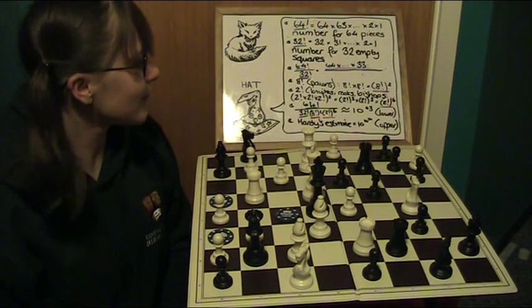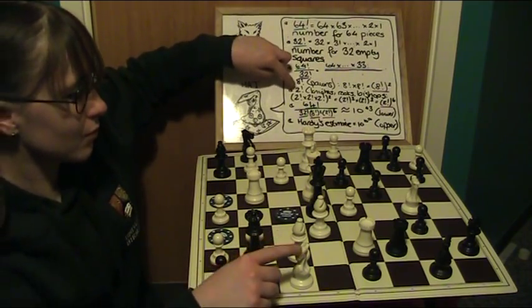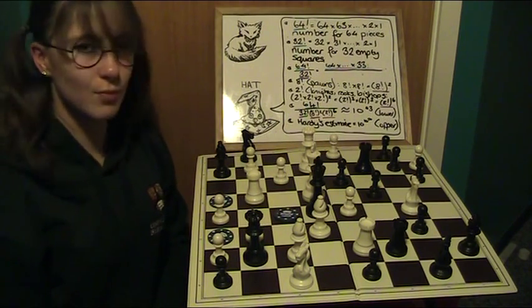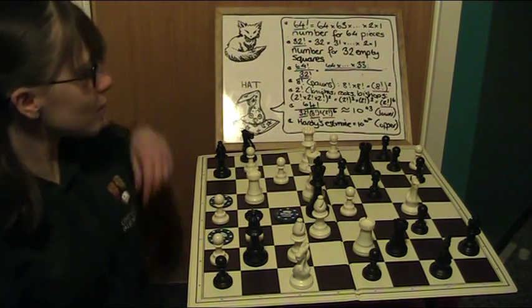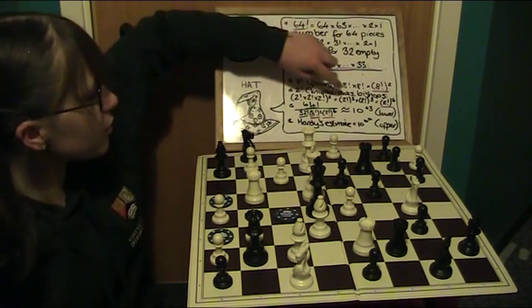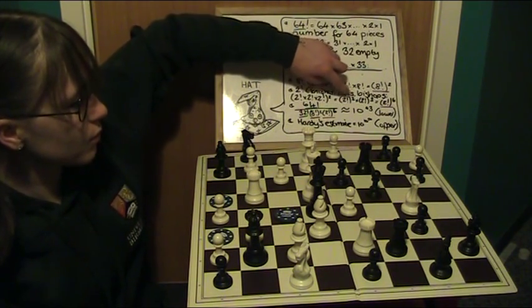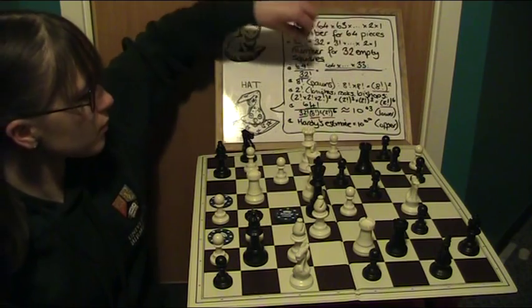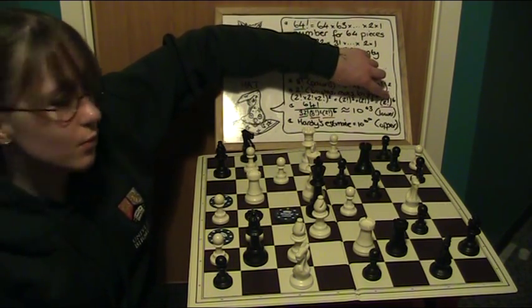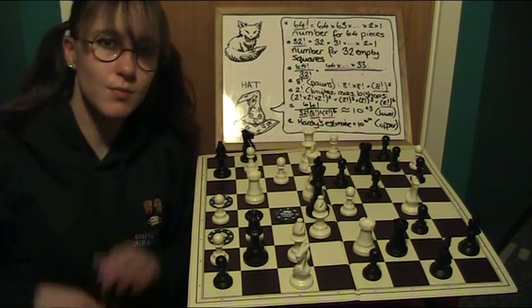So notice that we have for each player 2 factorial knights times 2 factorial rooks times 2 factorial bishop combinations. And we square this because of the 2 players. So again from earlier on we have 2 factorial multiplied by itself 3 times. We have 2 factorial cubed. We square this for the 2 players and multiplying our powers, we have 2 factorial raised to the power of 6. 2 factorials multiplied by itself a total of 6 times.